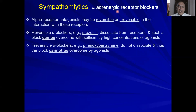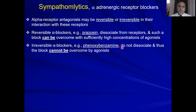Alpha-adrenergic blockers may be reversible or irreversible, depending on the nature of their binding with the alpha receptor. If they bind and then dissociate from the receptor — such as prazosin — these drugs are reversible, and you can regain the effect if you add more of the agonist such as adrenaline or noradrenaline. Irreversible alpha blockers bind to the alpha receptor but do not dissociate, or at least stay bound for a very long time, so you cannot overcome their effect or regain receptor activity by adding more agonist.